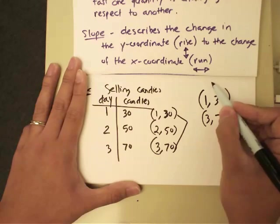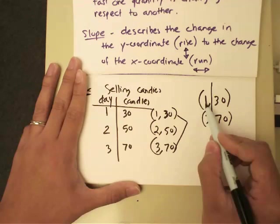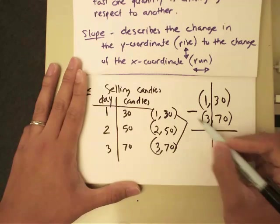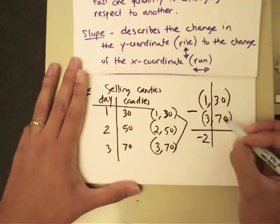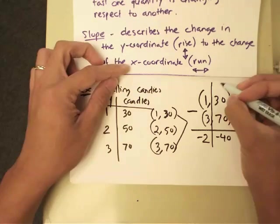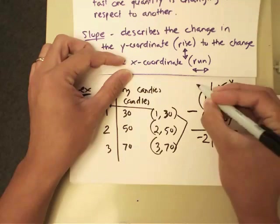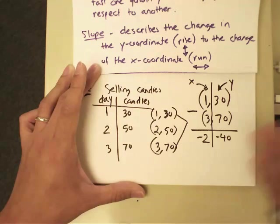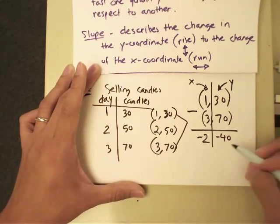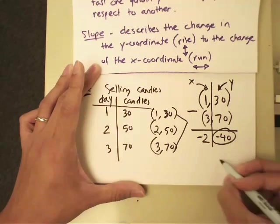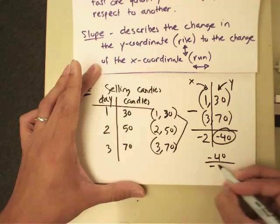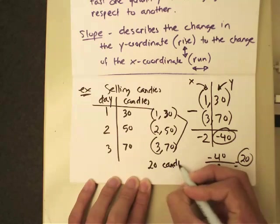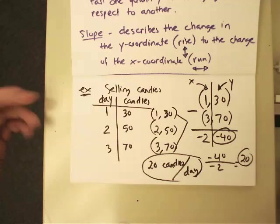I'll set this up vertically. We're comparing time and candies sold — how fast am I selling in terms of time. Set up vertically: first day 30 pieces, third day 70 pieces. Split into two columns separating the input and output, then subtract vertically just like a regular subtraction problem: 1 minus 3 is negative 2; 30 minus 70 is negative 40. The output is your y-value and the input is your x-value.